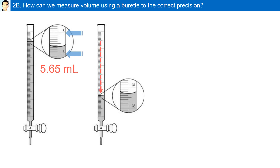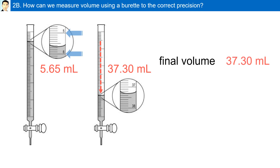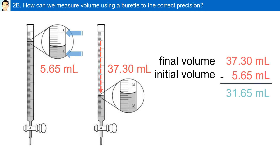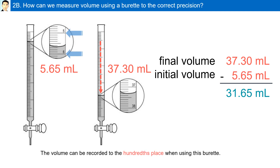After some liquid was released, the new volume reading from the top down — we notice the meniscus is exactly at 37.3 milliliters. However, this burette can measure to the hundredth place, therefore we must report our answer to the hundredth place: 37.30 milliliters. To determine the volume of liquid released, we will subtract the initial volume from the final volume, and the answer is 31.65 milliliters. Our answer is reported to the hundredth place because the volume in this burette is recorded to the hundredth place.